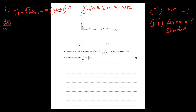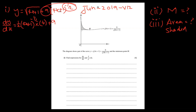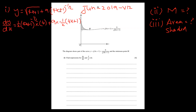dy/dx: the power comes down, so half comes down and the power is reduced to negative half. Base remains (4x+1), times the base derivative — 4x becomes 4 and 1 becomes 0. Same story for the second term: negative half multiplied with negative 9, power reduced to minus 3 over 2.